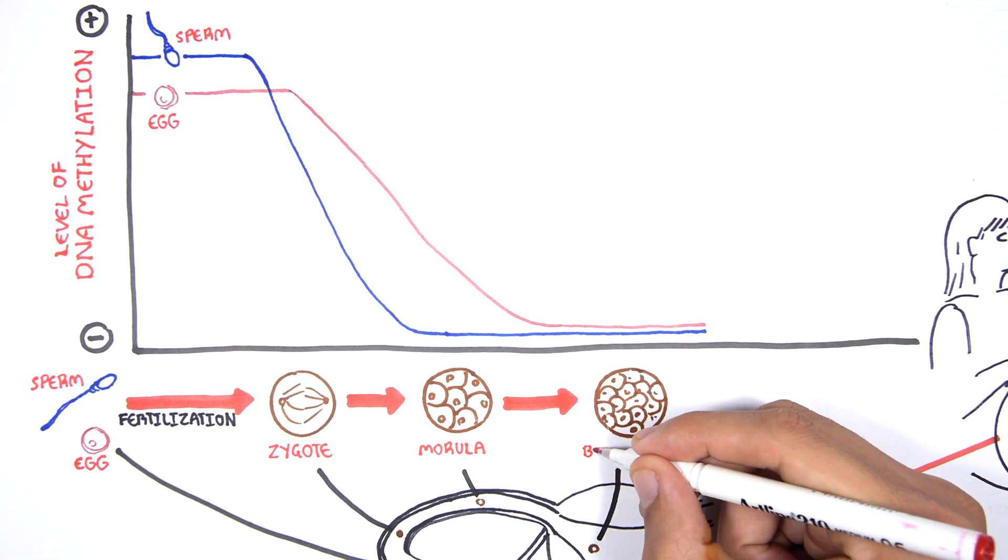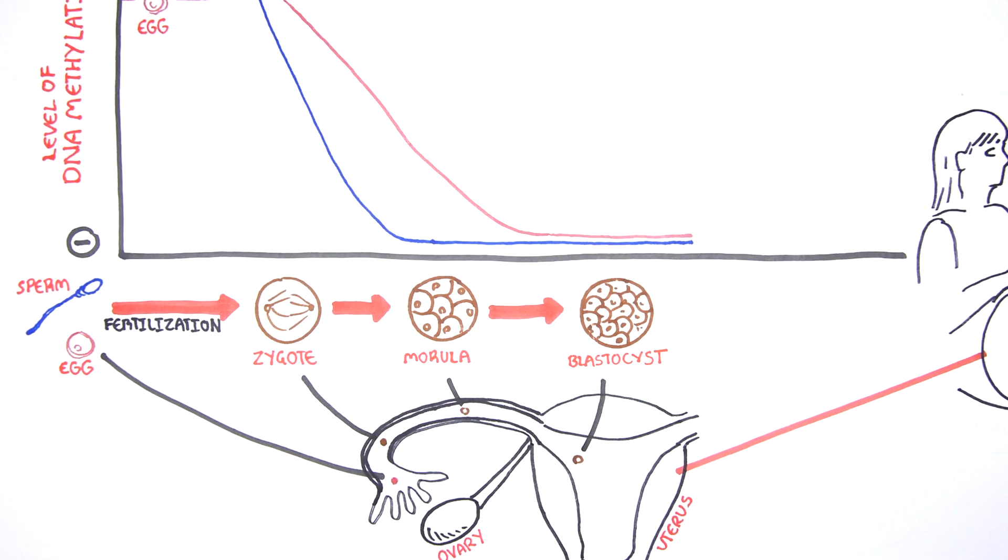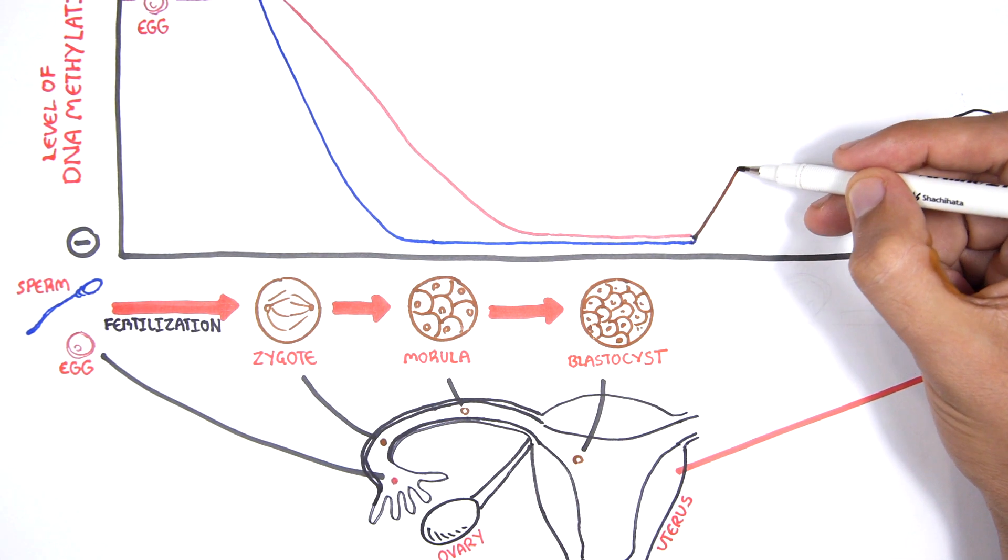At the blastocyst stage, de novo methylation is initiated. De novo methylation is where new methylation patterns are re-established in the growing embryo.